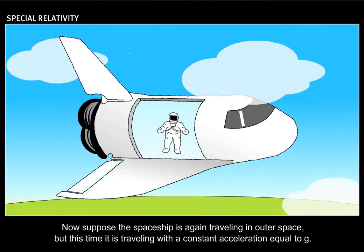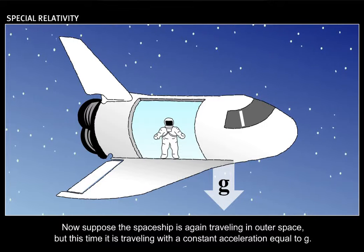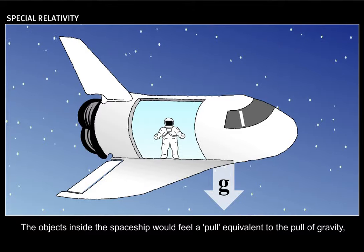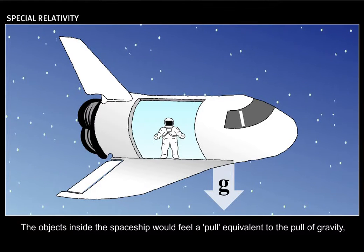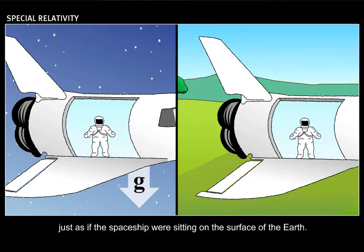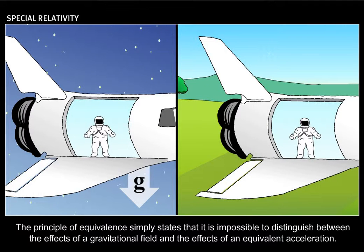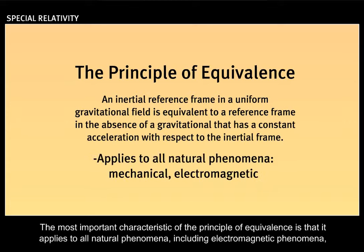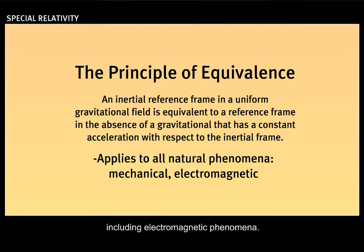Now suppose the spaceship is again traveling in outer space, but this time it is traveling with a constant acceleration equal to g. The objects inside the spaceship would feel a pull equivalent to the pull of gravity, just as if the spaceship were sitting on the surface of the earth. The principle of equivalence simply states that it is impossible to distinguish between the effects of a gravitational field and the effects of an equivalent acceleration. The most important characteristic of the principle of equivalence is that it applies to all natural phenomena, including electromagnetic phenomena.